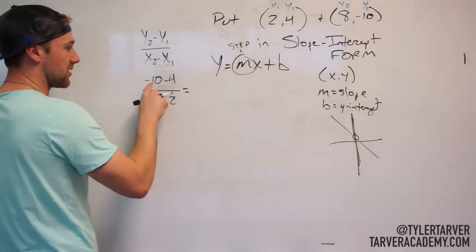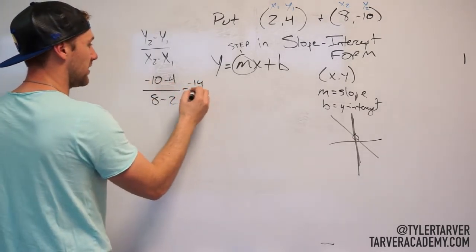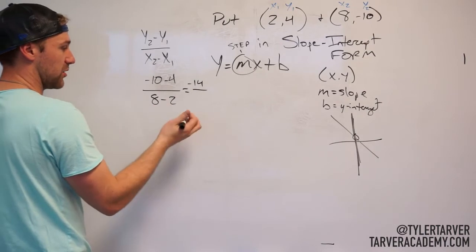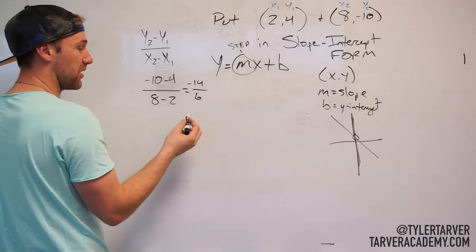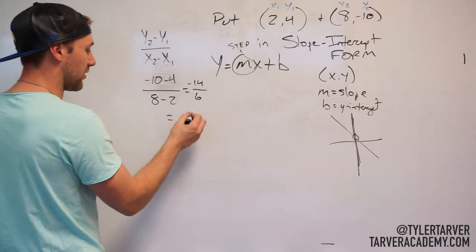Okay, and then I just solve it. Solve the top first. Look at them as like two separate problems. Negative 10 minus 4 is negative 14, and then 8 minus 2 is 6. Okay, can that be reduced? Yes, it can because those are both even numbers. It can be negative 7 over 3.